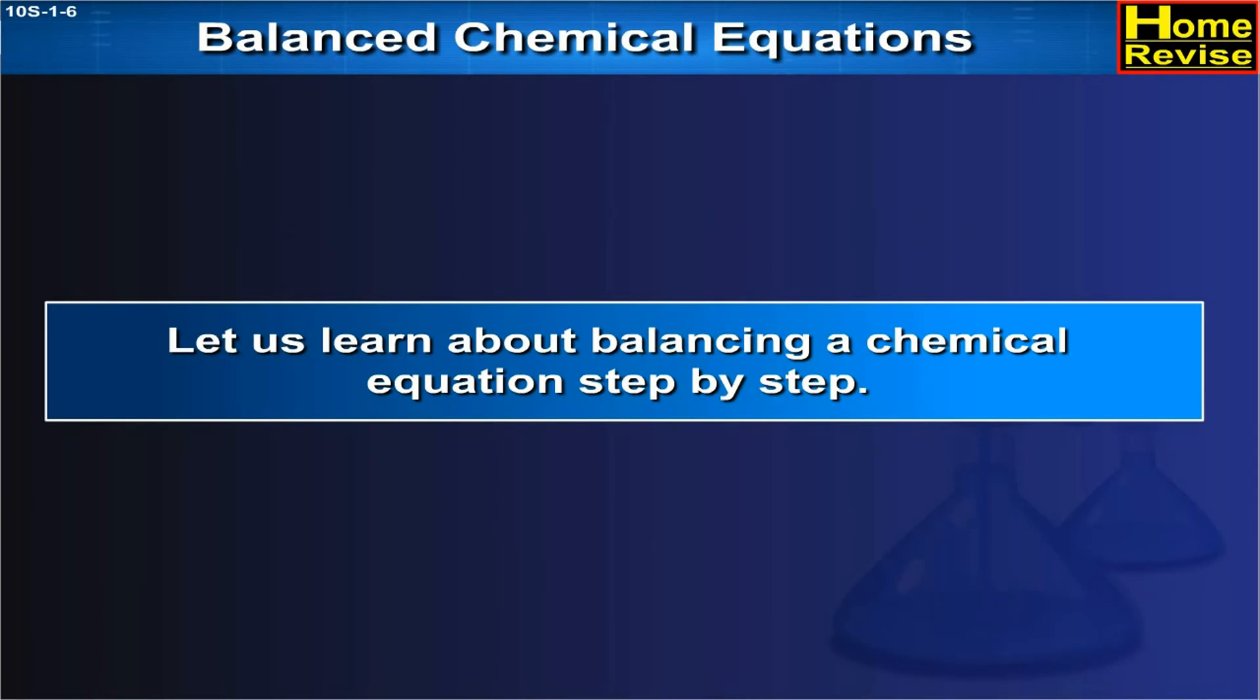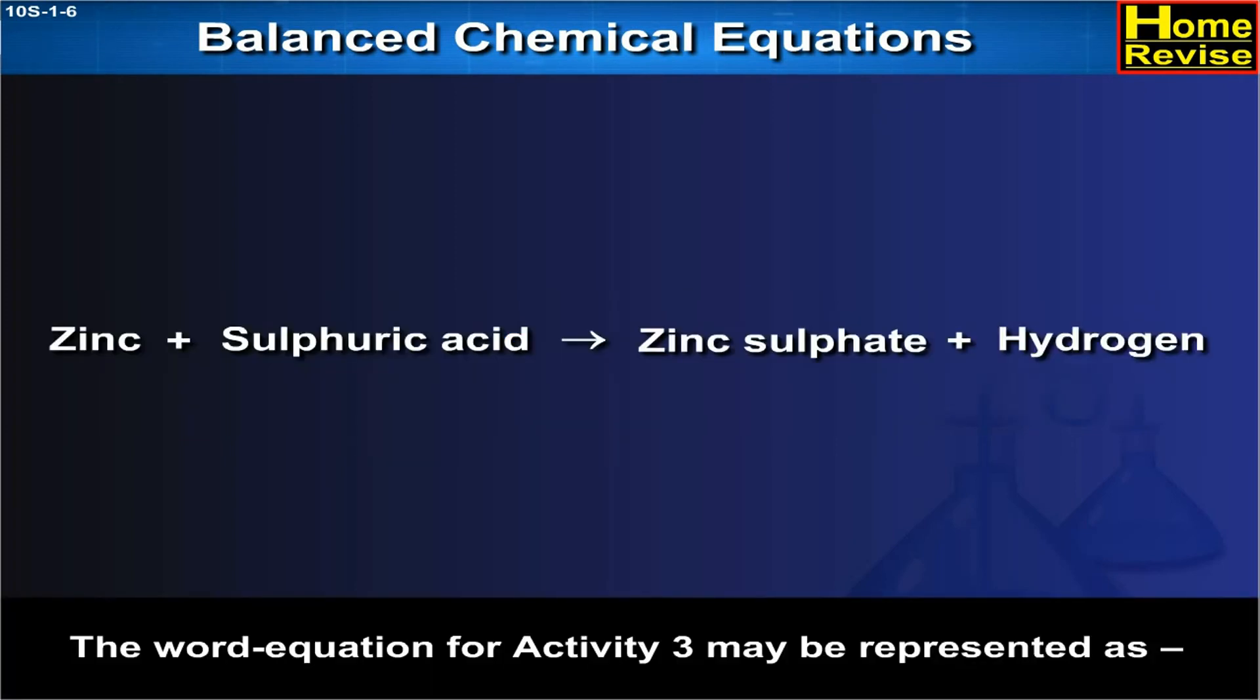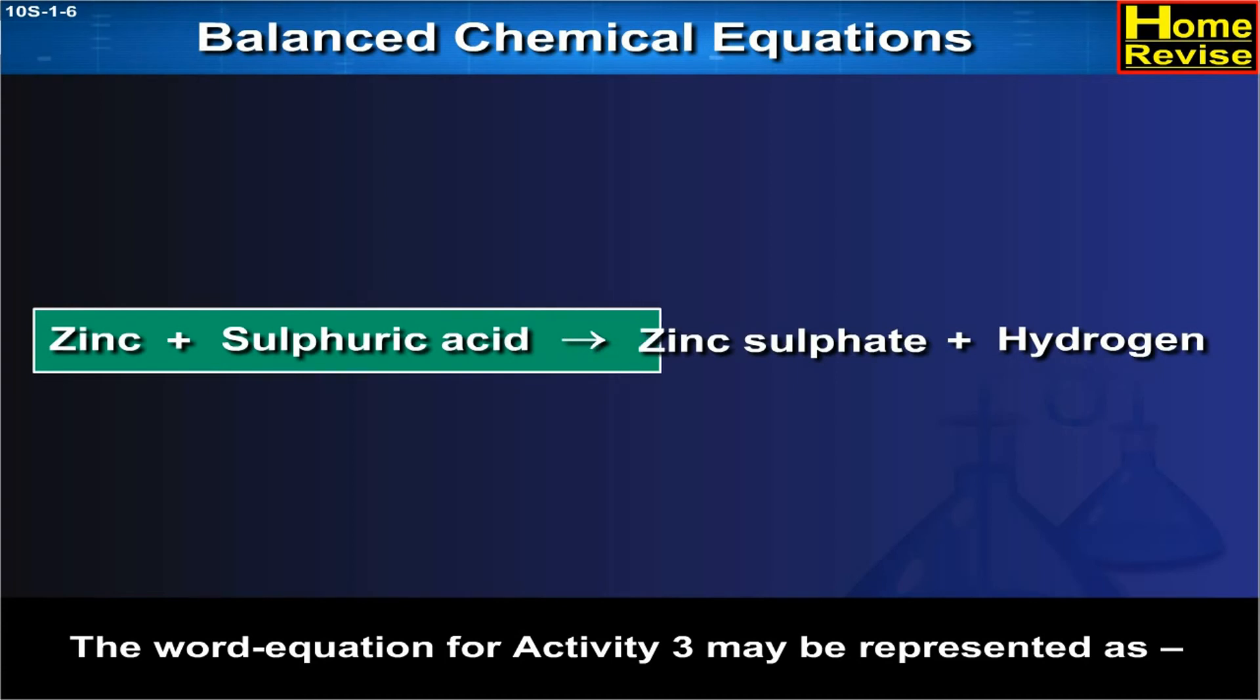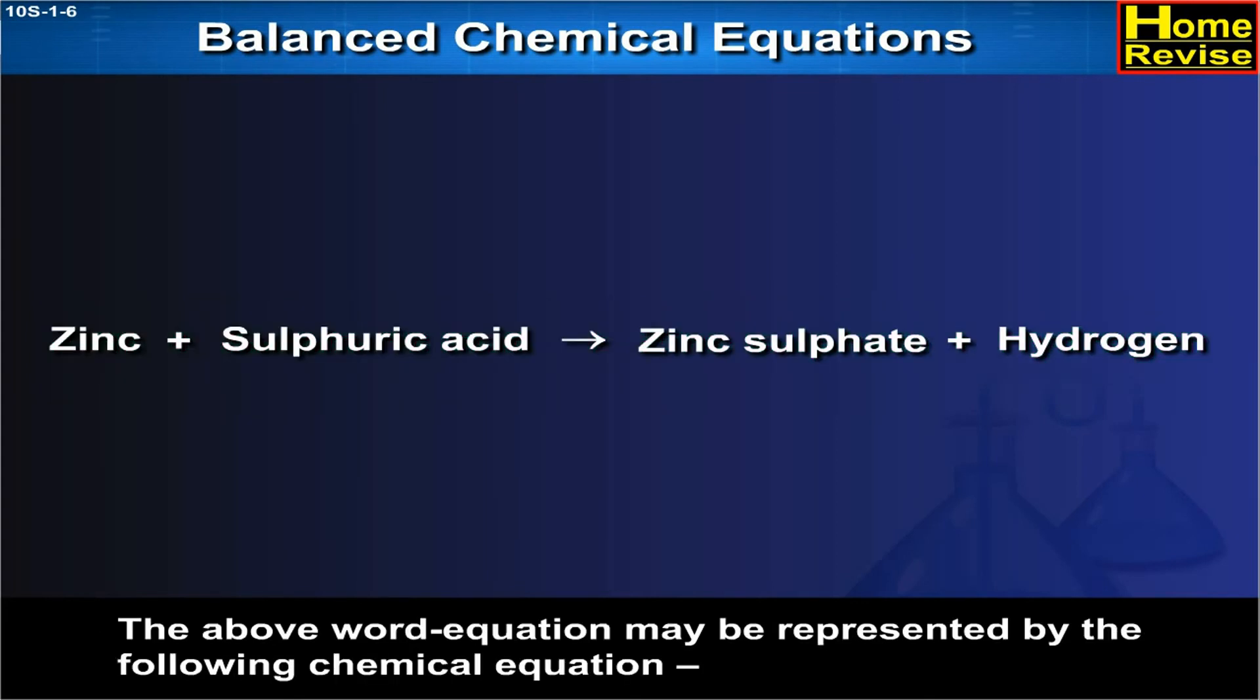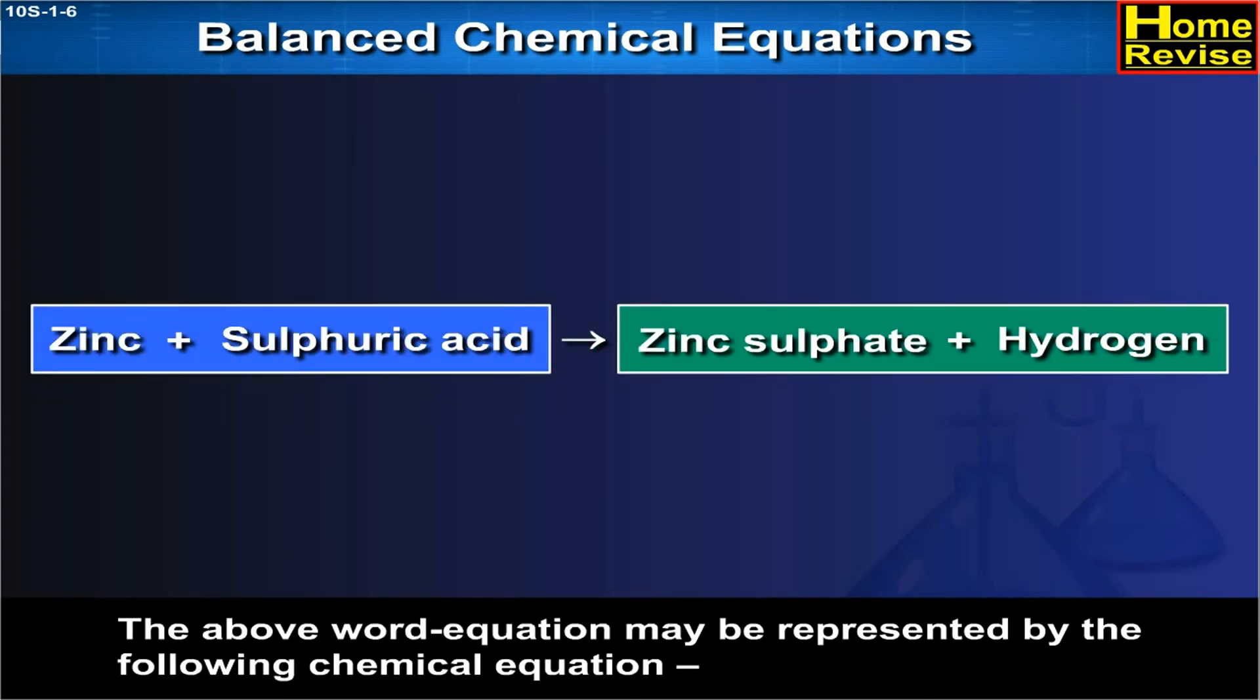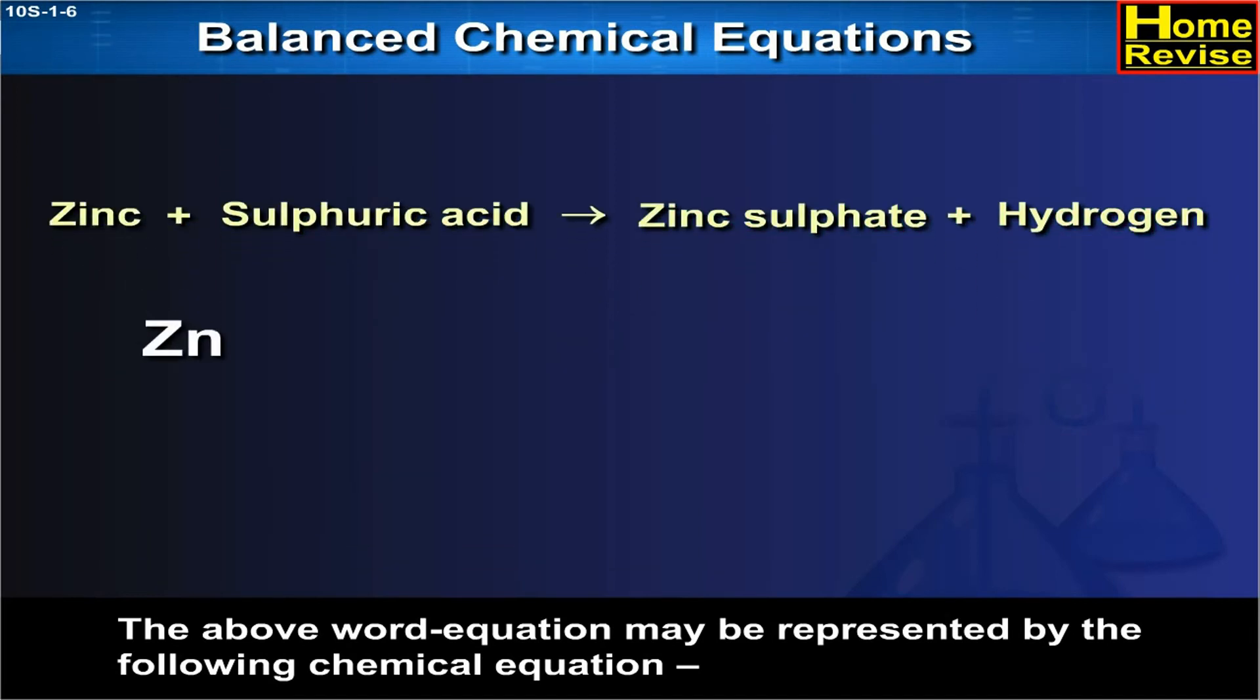Let us learn about balancing a chemical equation step by step. The word equation for activity 3 may be represented as Zinc plus sulfuric acid gives Zinc sulfate plus hydrogen. The above word equation may be represented by the following chemical equation: Zn plus H2SO4 gives ZnSO4 plus H2.